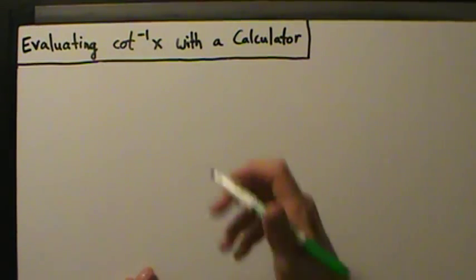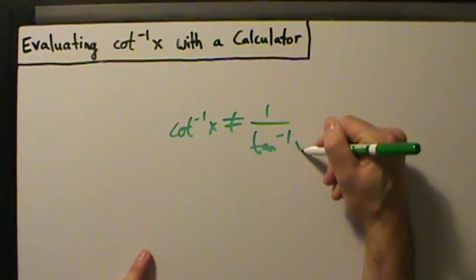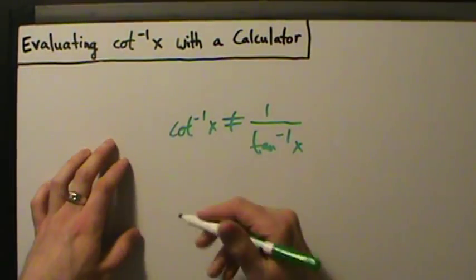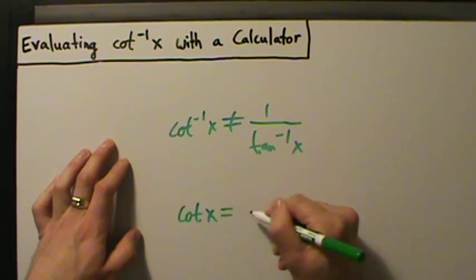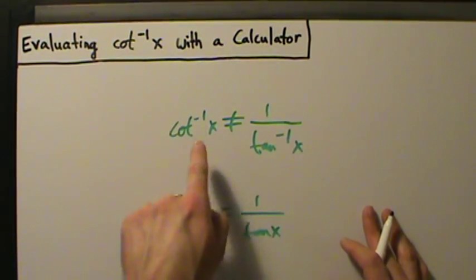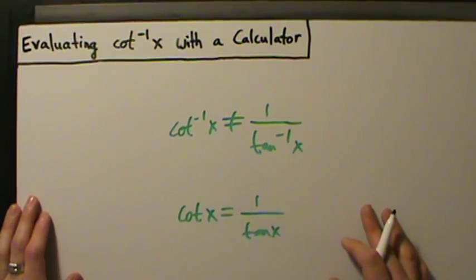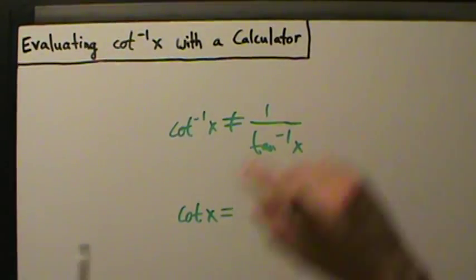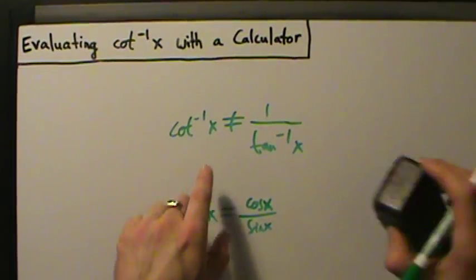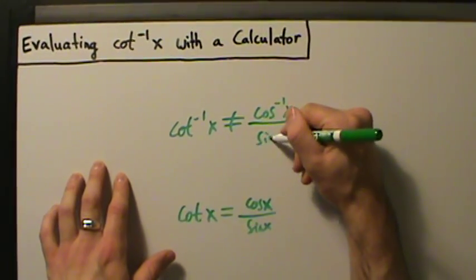First, notice that the inverse cotangent of x is not the same thing as 1 over the inverse tangent of x. Just like in the previous two videos, we know that cotangent of x equals 1 over tangent of x, so we might expect this to be true — but the inverse cotangent of x is not equal to the reciprocal of the inverse tangent of x. Likewise, cotangent of x equals cosine of x divided by sine of x, but it is not true that inverse cotangent of x equals inverse cosine of x divided by inverse sine of x.